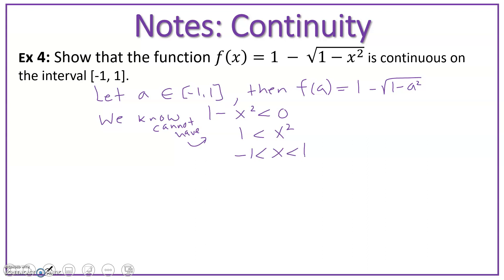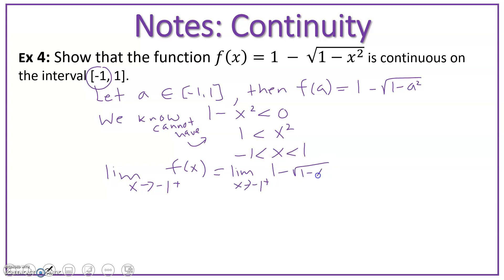So we're good here in saying that this is continuous on this interval, negative 1 to 1. Now we need to check our limits from the left and the right. Let's approach our endpoint on the left — x approaching negative 1 from the right of f of x. We're going to get the limit as x approaches negative 1 from the right of 1 minus the square root of 1 minus x squared. We're plugging in something just to the right, like negative 0.99999.